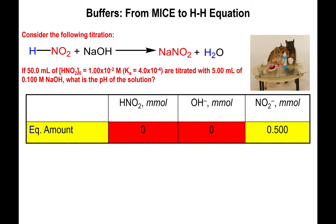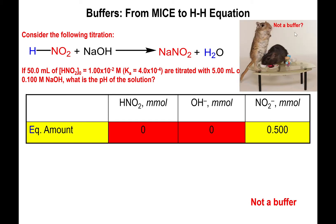You added exactly the same amount of hydroxide needed to fully remove the conjugate acid, which is why you are at the equivalence point. But because you do not have the conjugate acid present, this cannot be a buffer anymore. Lacking the conjugate acid means this cannot be a buffer.